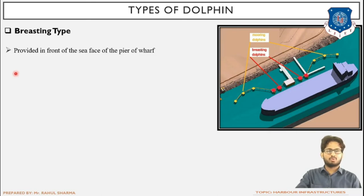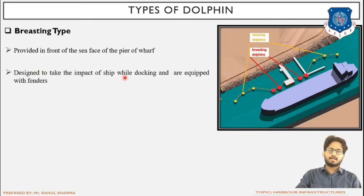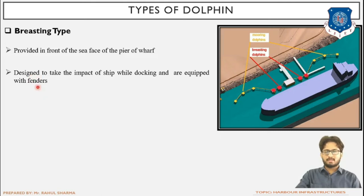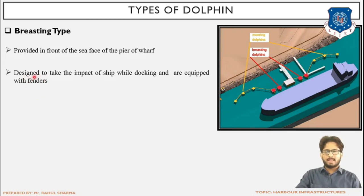Resting dolphins are designed to take the impact of the ship during docking and are equipped with fenders. Fenders are components used for absorption of shock energy — they are made of rubber or wood. Whenever the ship comes into contact with the platform, the rubber or wooden fender prevents damage to both the ship and the platform. Fenders absorb the shock energy to ensure no damage occurs to the ship or platform.